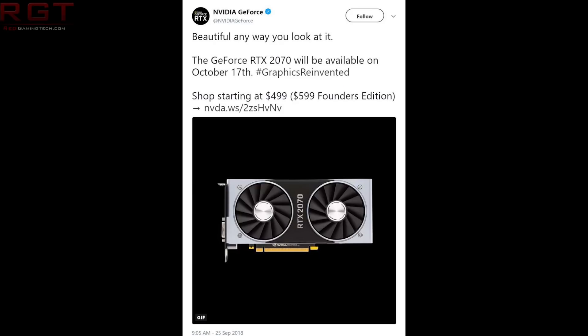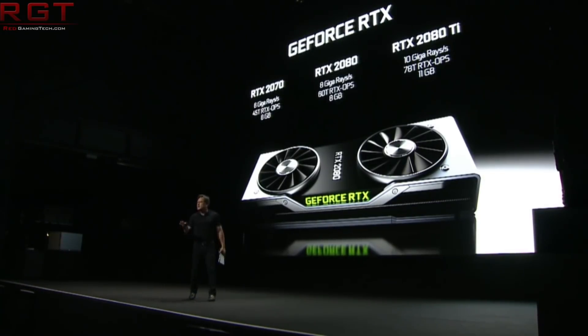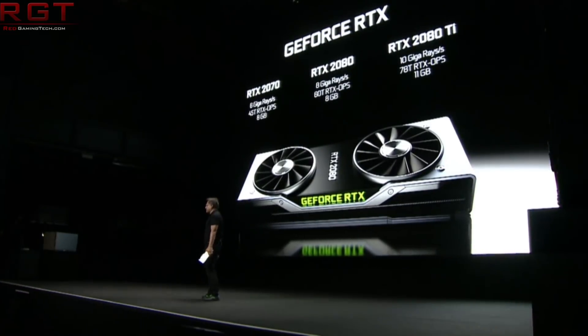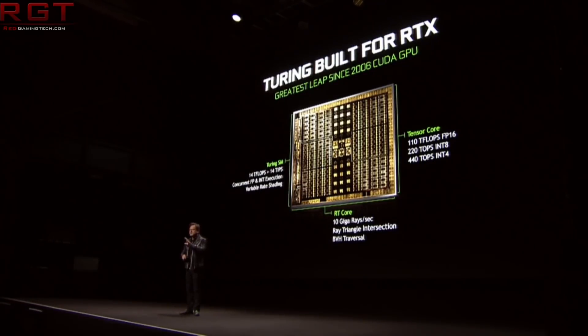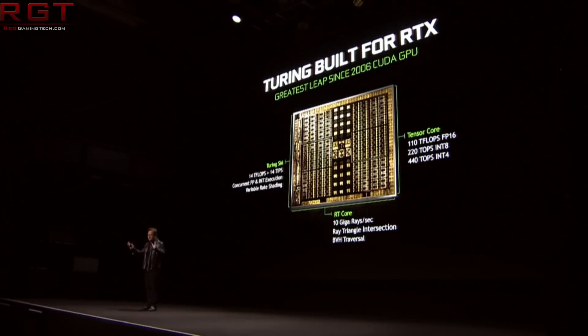The RTX 2070 is going to be coming out on October 17th. They did kind of say October for this, so it's very much smack bang in the middle of that. We are going to be seeing a TU106 GPU for the RTX 2070. A main sticking point with this card, as with most of the Turing lineup, is the price — because it's expected to be retailing at $499 US dollars.